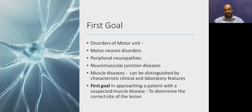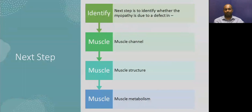The first goal when we see a patient with suspected myopathy is to differentiate it from other diseases of the lower motor neuron. The first goal is to determine the correct site of localization, which can be distinguished by characteristic clinical and laboratory features. The next step, once we identify muscle localization, is to identify where exactly the defect is — whether it is a defect in the muscle channel, muscle structure, or muscle metabolism.